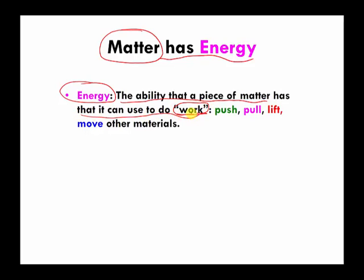Energy is the ability that a piece of material has that can be used to do work. And I have a very informal definition of what work is. Work is the ability to push, pull, lift, or move other materials around. So what I am telling you is that material objects have certain amounts of abilities to push, pull, lift, or move other materials around, and that ability is called energy.